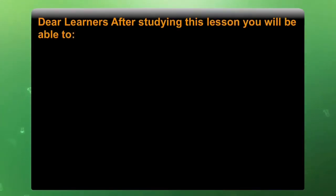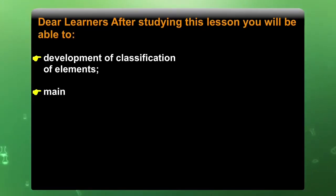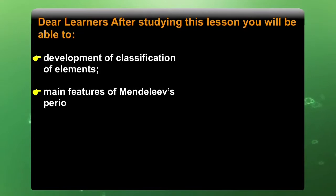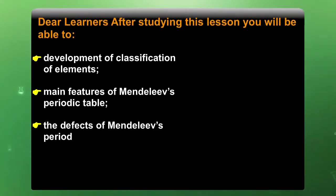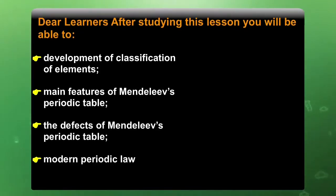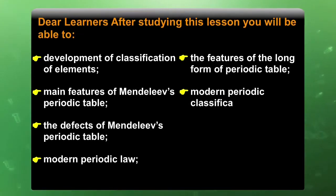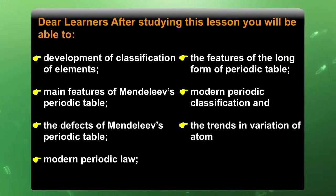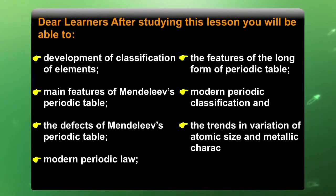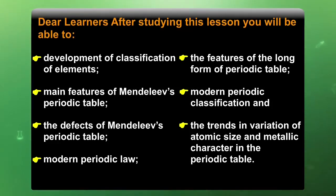Dear learners, after studying this lesson, you will be able to understand about the development of classification of elements, main features of Mendeleev's periodic table, the defects of Mendeleev's periodic table, modern periodic law, the features of the long form of periodic table, modern periodic classification, and the trends in variation of atomic size and metallic character in the periodic table.